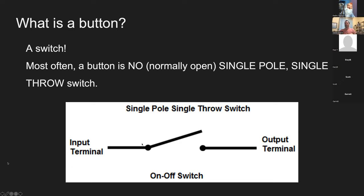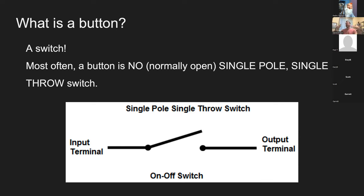A single pole means we have one switching line. Normally open means that in its relaxed state when it's not being triggered, the continuity is not there. Normally open means the wires are not touching; normally closed means they default to the touching state. This is essentially the default state when a button or relay is not switched or activated.